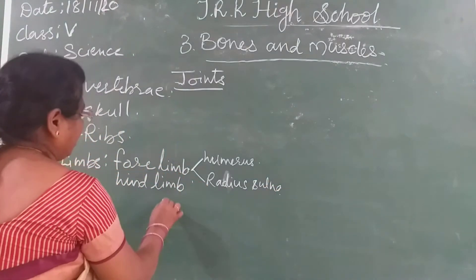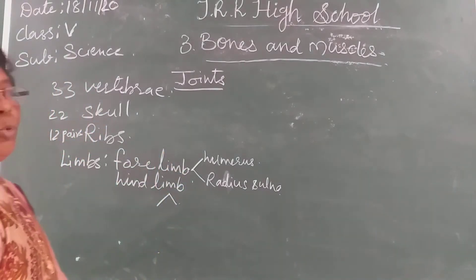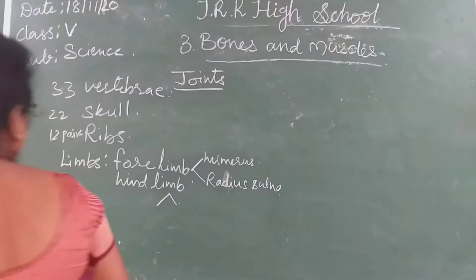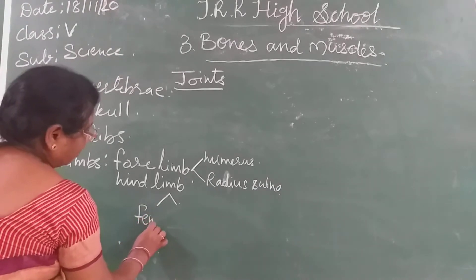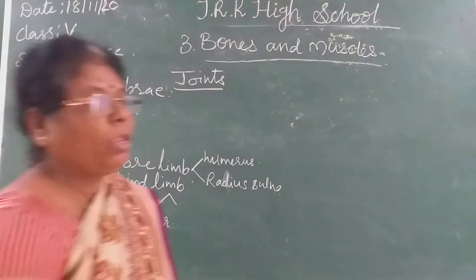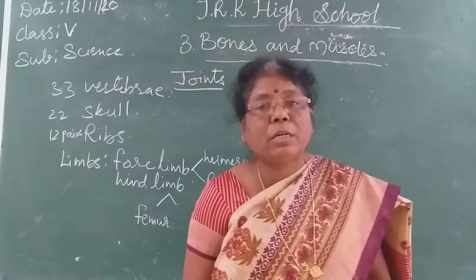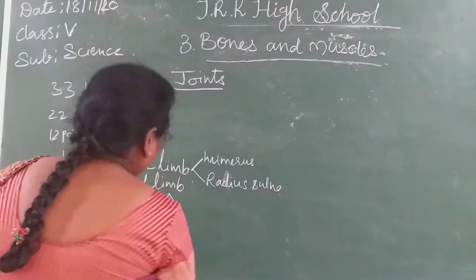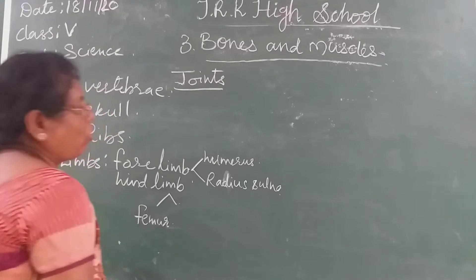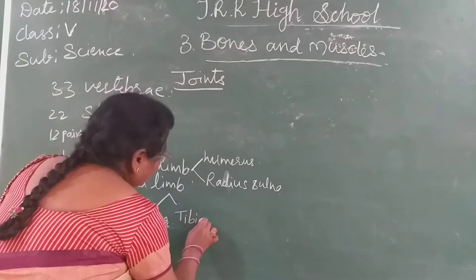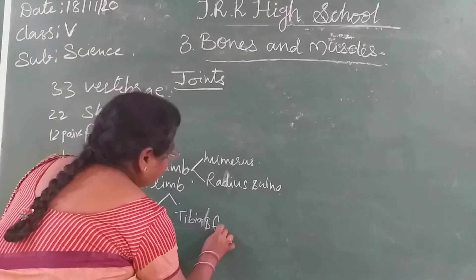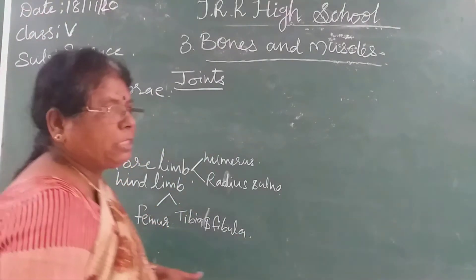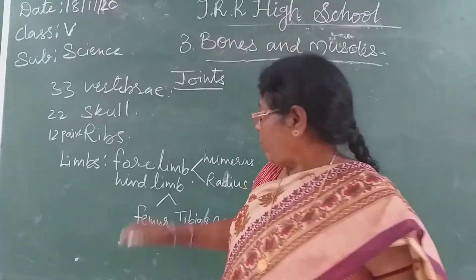In the hind limbs also, we have the longest and strongest bone which bears the weight of the body - it is called the femur, or thigh bone. Below the knee, there are again 2 bones called tibia and fibula. So these are the bones in the forelimbs (hands) and hind limbs (legs).